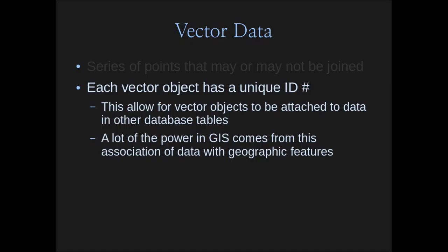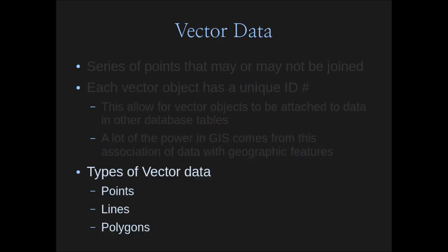We can apply data to vector objects and join the spatial with the non-spatial. If you get data from other sources that didn't come from a GIS system — like a table of data from Wikipedia for all states or counties — you can associate that with your GIS data relatively easily by joining through a unique ID, because we're using these relational databases.